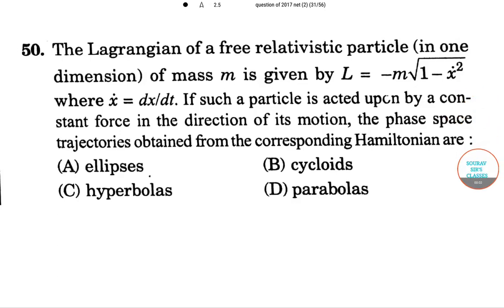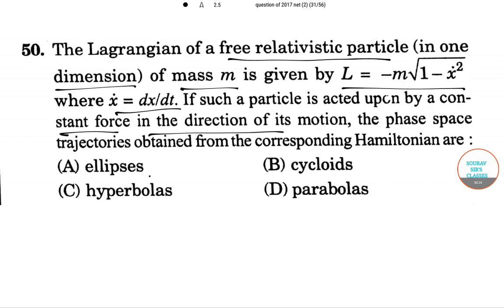Today we will discuss the CSIR-NET 2017 physics question paper. In this question, the Lagrangian of a free relativistic particle in one dimension of mass M is given, where x-dot equals dx/dt. If such a particle is acted upon by a constant force in the direction of its motion, the phase space trajectories obtained from the corresponding Hamiltonian are what?